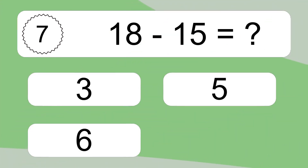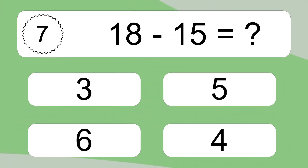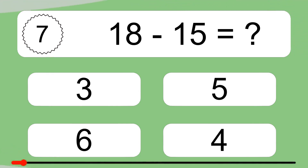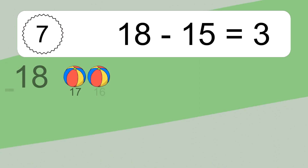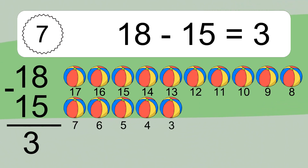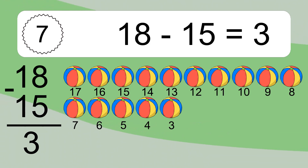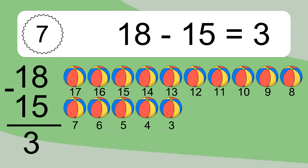18 minus 15 equals what? 18 minus 15 equals 3. Let's count it: 17, 16, 15, 14, 13, 12, 11, 10, 9, 8, 7, 6, 5, 4, 3.